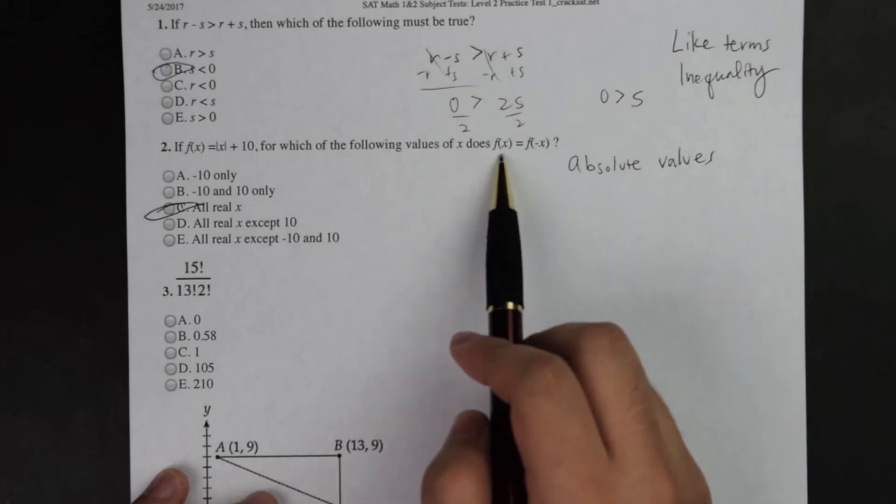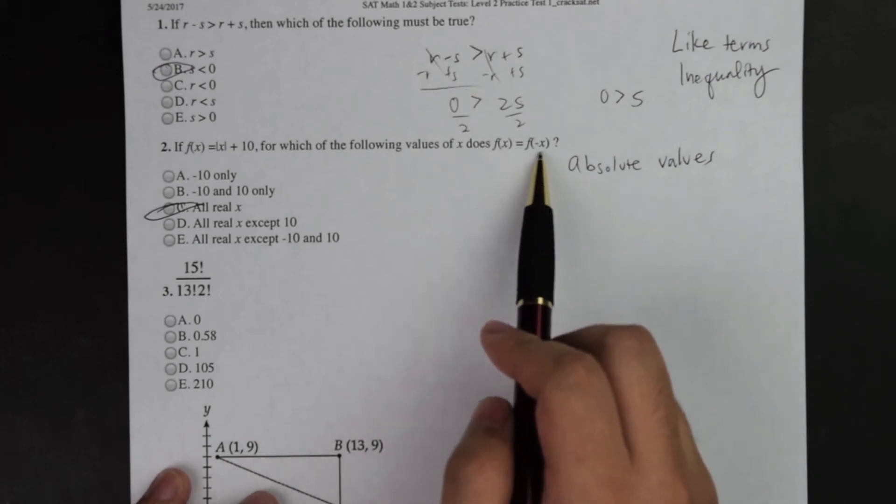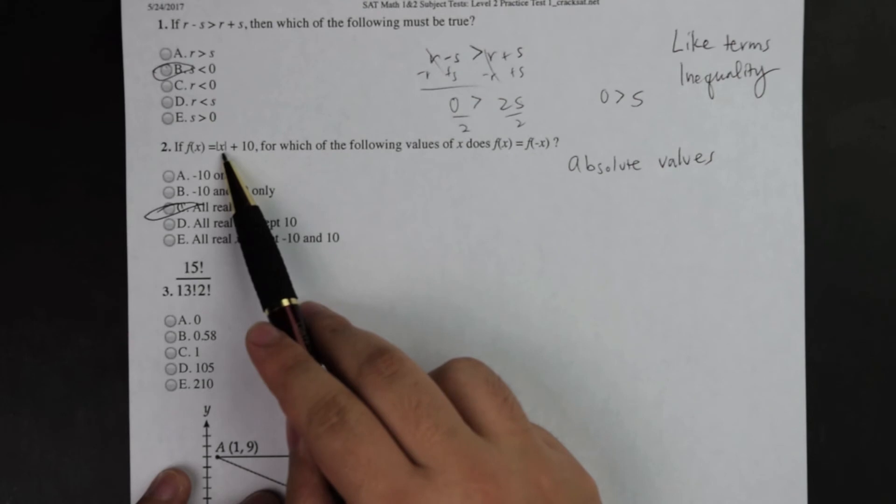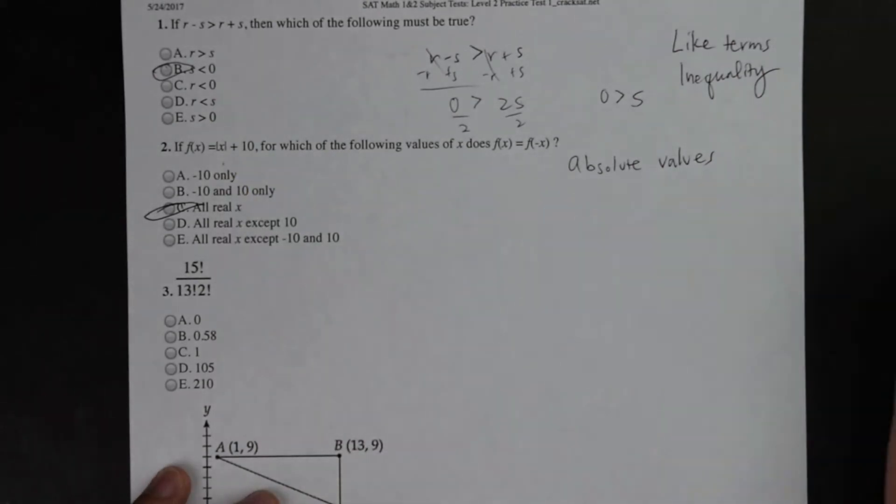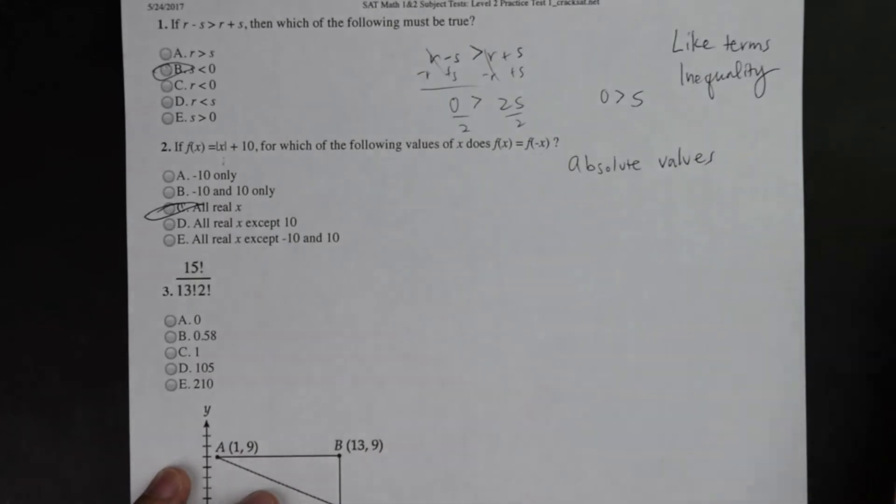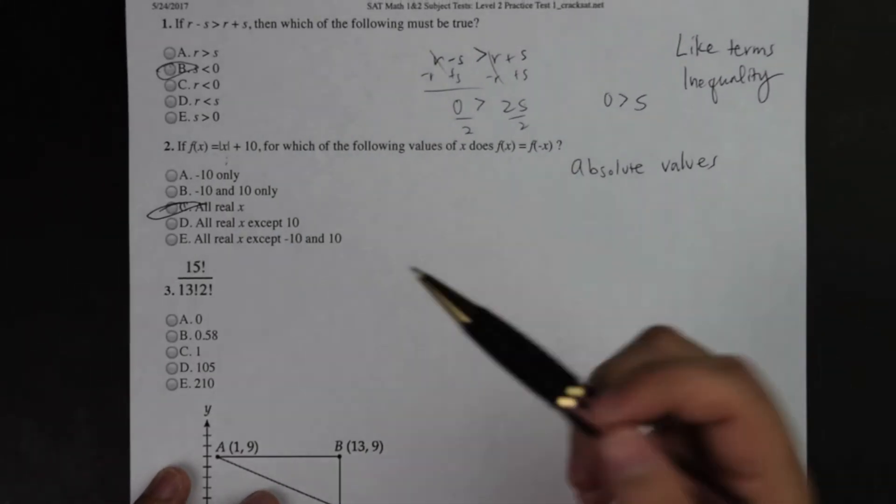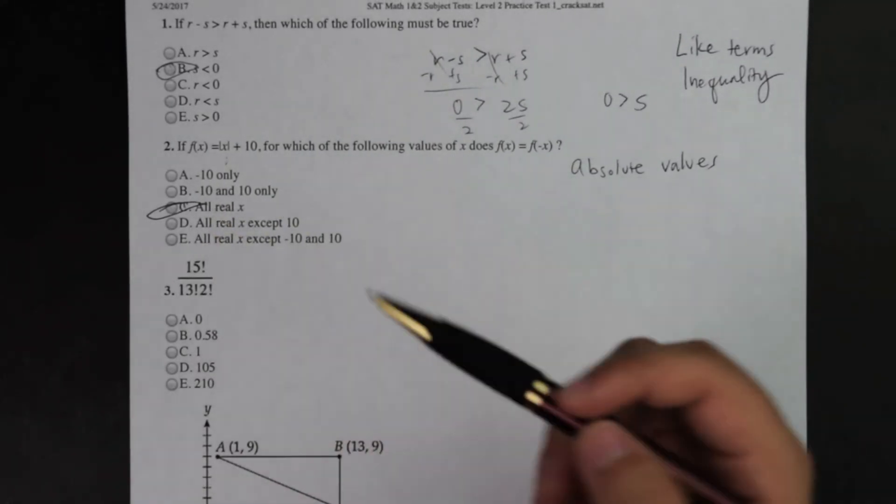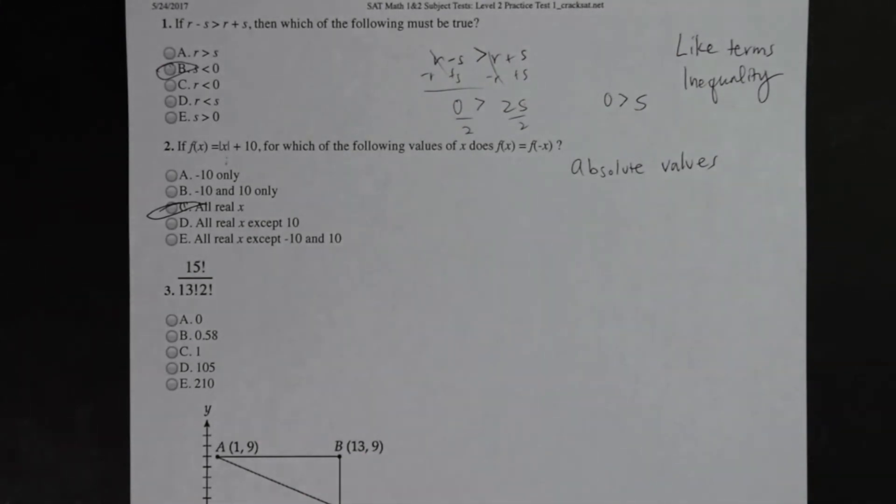Because this was an absolute value, I knew right off that if f of x, when does f of x equals f of negative x, no matter what I plug into negative x, it's still going to come out as x. Just as much as whatever absolute value of x comes in there will come out as x. And so that's why for that scenario I knew right off C, all real possible values of x is going to be the correct answer. So for my final answer, two is C.